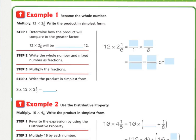Looking at example one, rename the whole number. This is another way when working with whole numbers and mixed numbers. Multiply 12 times two and one-sixth. Write the product in the simplest form. That means to reduce. Step one, determine how the product will compare to the greater factor. So 12 times two and one-sixth will be what compared to 12? Well, we know 12 times two would be 24, which is greater than 12. So even with the fraction, our answer should end up being greater than 12.